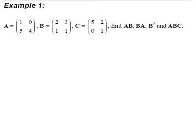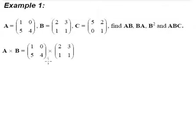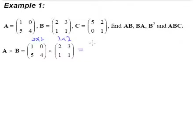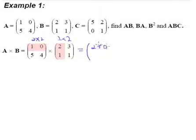Let's take a look at the first one: A multiplied by B. This is a 2 by 2 matrix multiplied by a 2 by 2 matrix, so we know that this multiplication can be done and our answer will be a 2 by 2 matrix as well. First row, first column: 1 multiplied by 2 gives us 2, plus 0 multiplied by 1 gives 0. So it will be 2 plus 0.